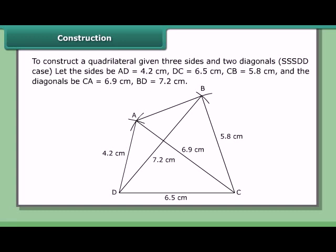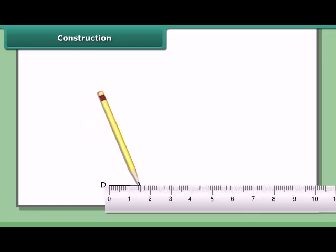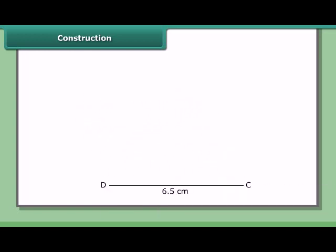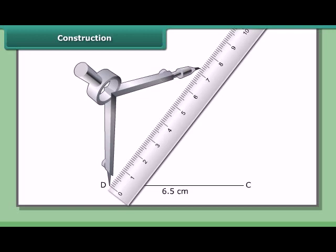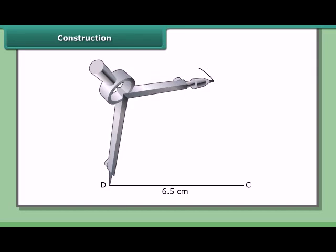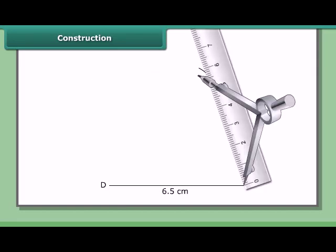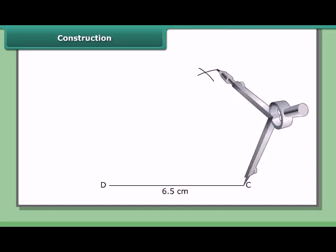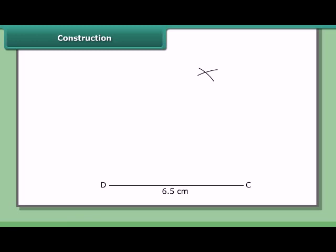Constructing triangle BCD: draw DC = 6.5 cm. With D as center and radius 7.2 cm, draw an arc. With C as center and radius 5.8 cm, draw another arc to cut the previous arc at B. Join CB and DB.